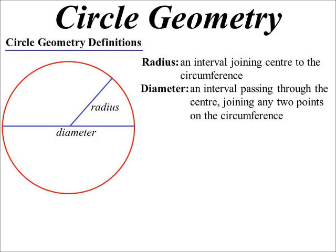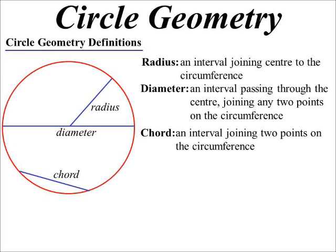A diameter is also an interval. It passes through the center and joins two points on the circumference. A chord is also an interval joining two points on the circumference, but it does not necessarily go through the center. Therefore, the diameter is in fact a chord, but a very special chord.